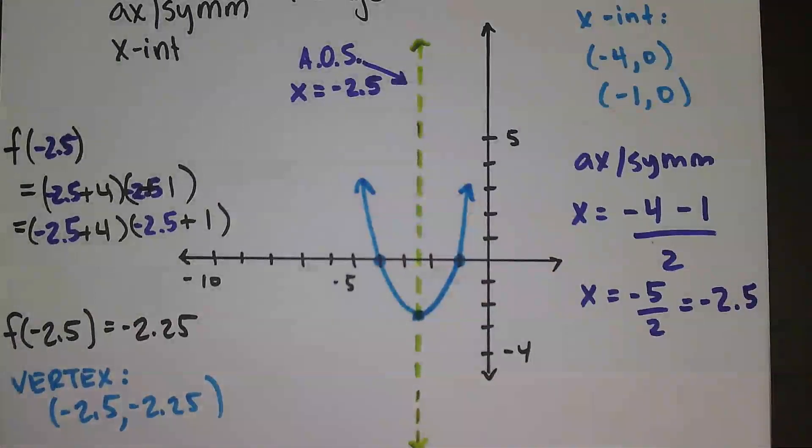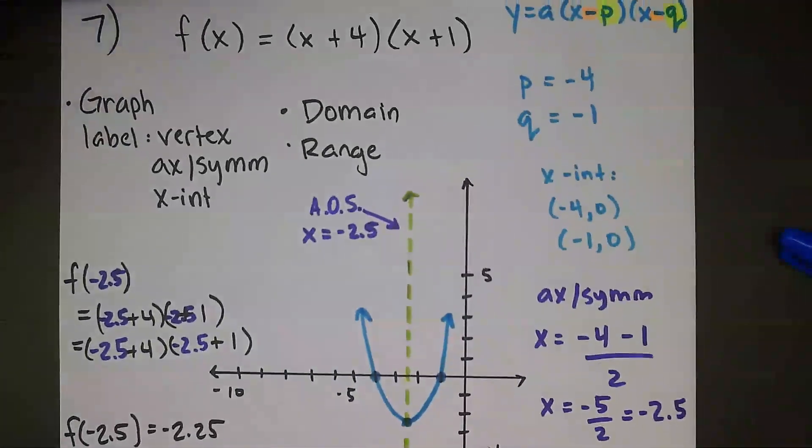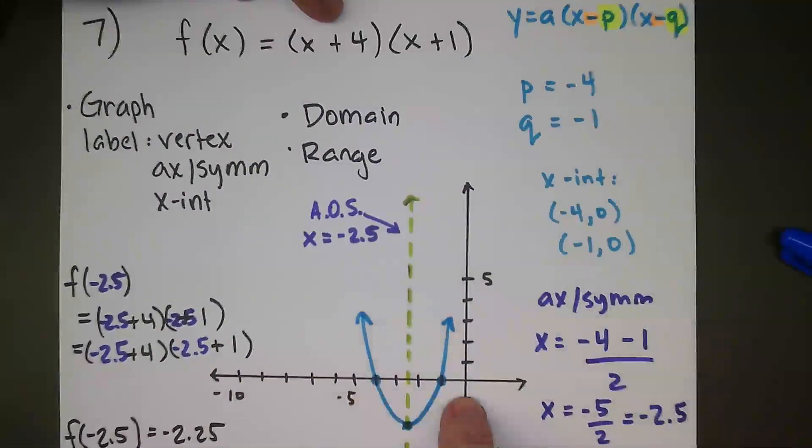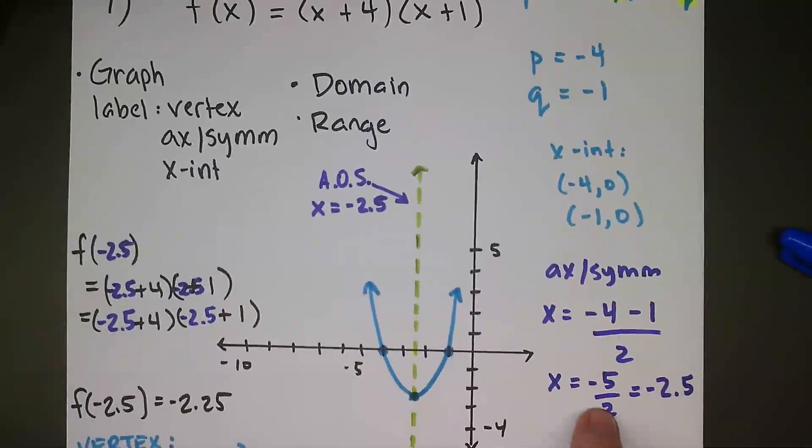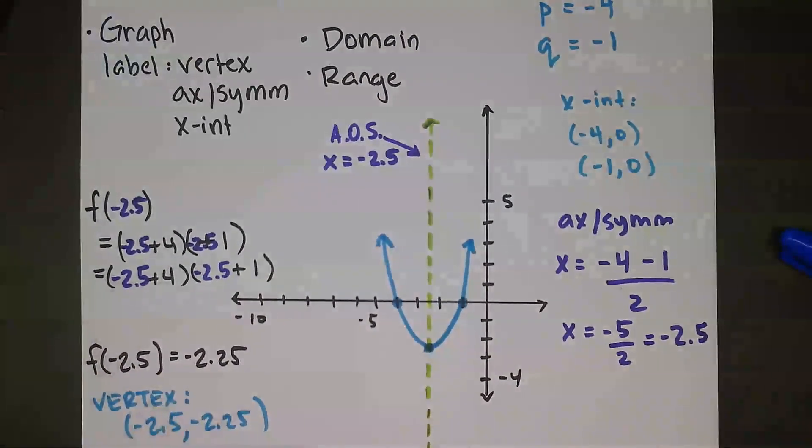So maybe we want to see kind of all of what's happening there. Original function, P and Q, x-intercepts. Use them to find the axis of symmetry. Plug that axis of symmetry in to get the corresponding y value, which is the vertex. It did ask for the domain and range, so I'll put that down here.